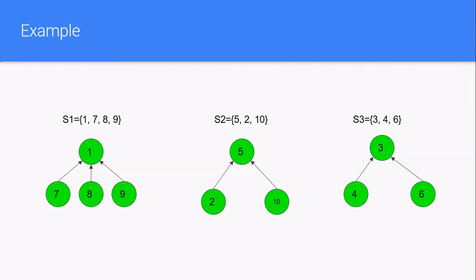So here are some disjoint sets. The set S1 equals 1, 7, 8, 9, and we can represent it as a disjoint set data structure like this. And you can see all the arrows are pointing towards node 1. This denotes that node 1 is the root node.